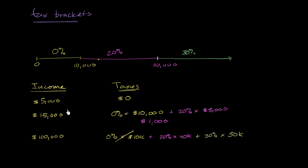So this adds up to, well, this is nothing. 20% of $40,000 is going to be $8,000, and then 30% of $50,000 is going to be $15,000.